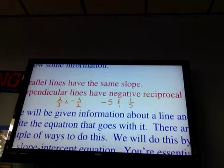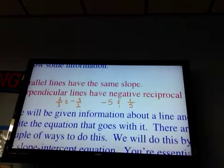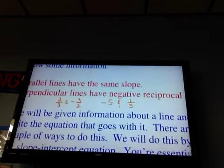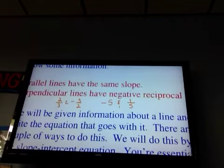Because right now, even though we don't see it, there's a one under that five. So when I flip it, I'm going to get one over five. So perpendicular means you flip it, and you change the sign.